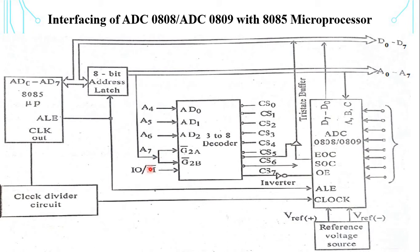The decoder generates 8 chip select signals, CS0 to CS7. Three chip select signals are used for the ADC interface. The chip select signal CS6 is used to give the start of conversion signal to the ADC along with the channel address.